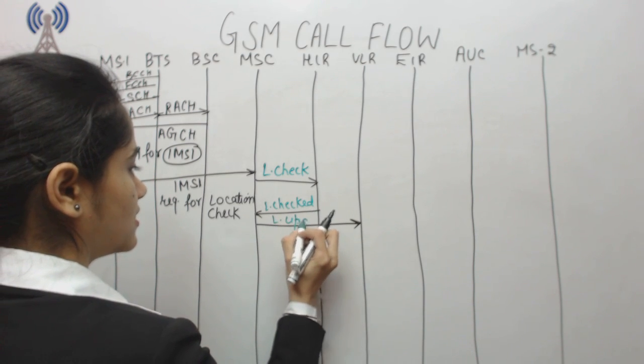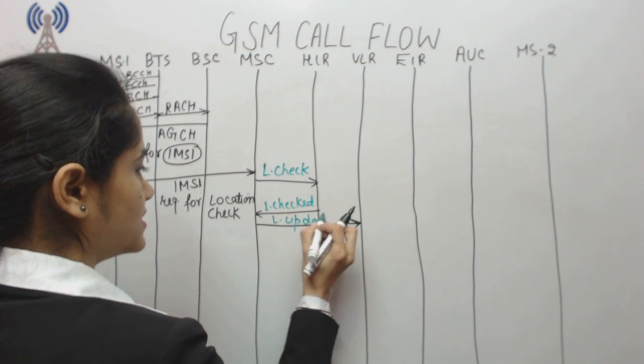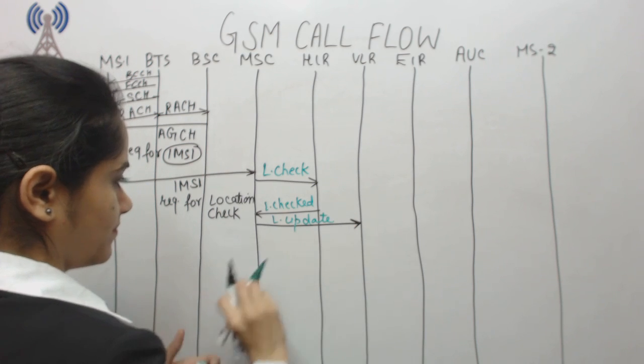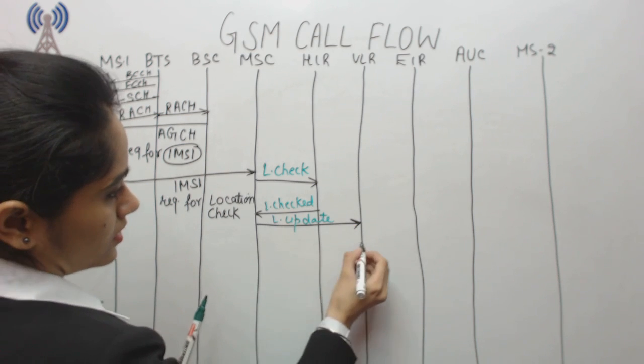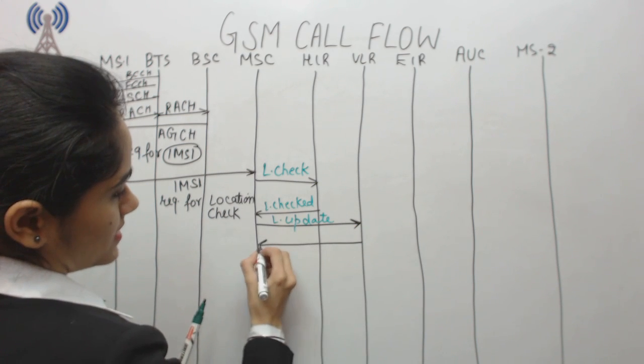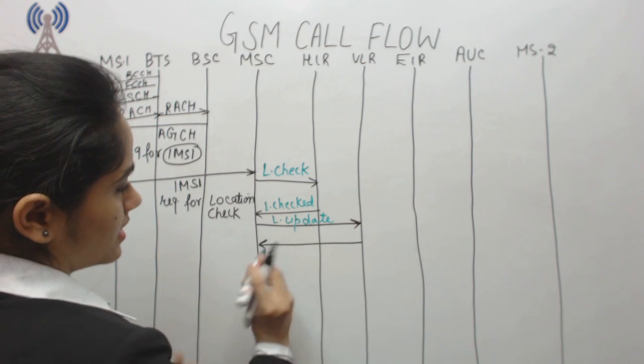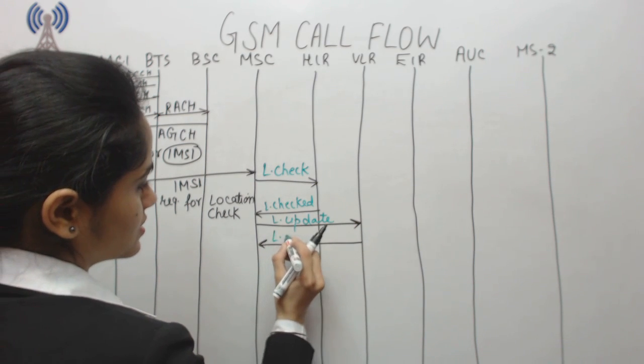After the HLR location check, the MSC communicates with the VLR with a Location Update request — please update the location of this mobile station. The VLR processes and acknowledges the location update.